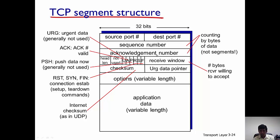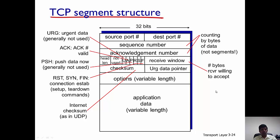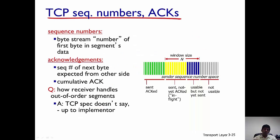Both the sequence number and acknowledgement number count the number of bytes of data, not segments. We'll come to these in detail in the next slide. There are also a few other fields — each is a bit — which are used when handshake messages are exchanged, for example SYN and FIN. We will come to these different fields later in detail.